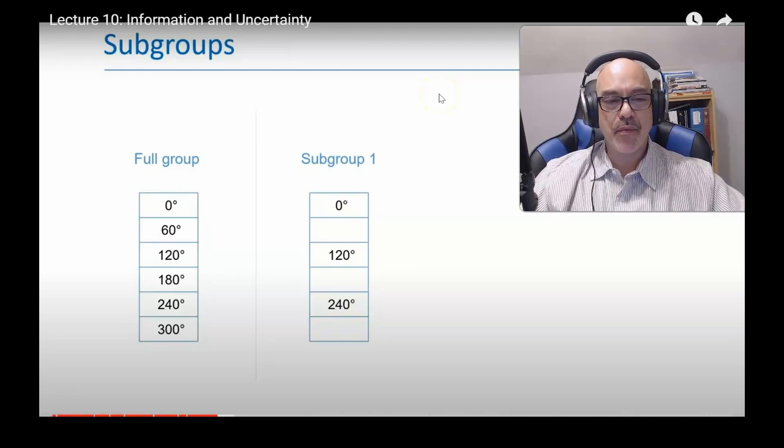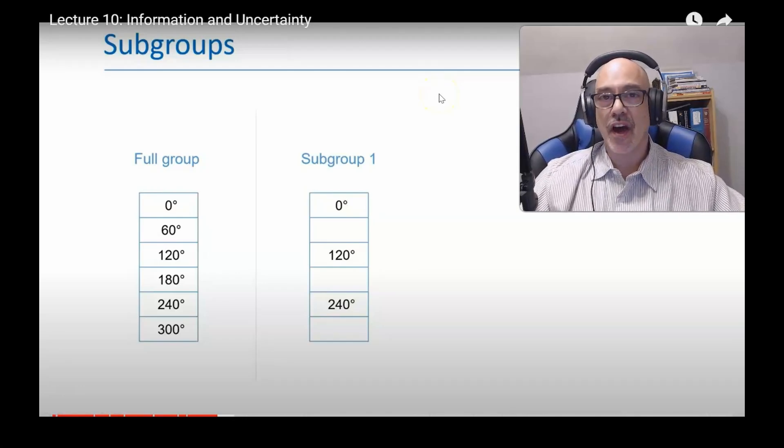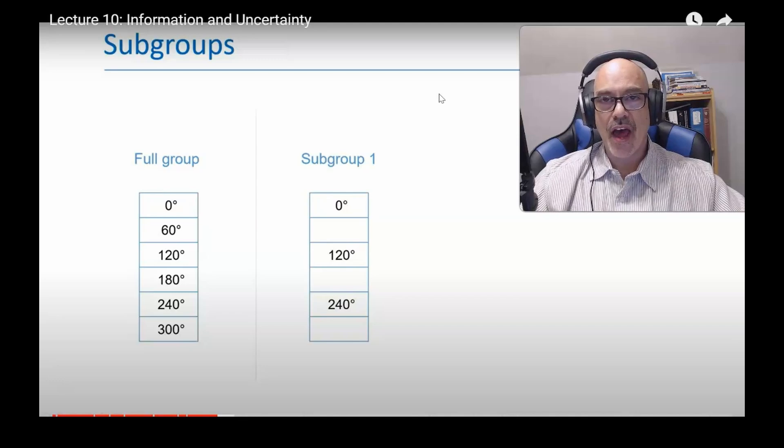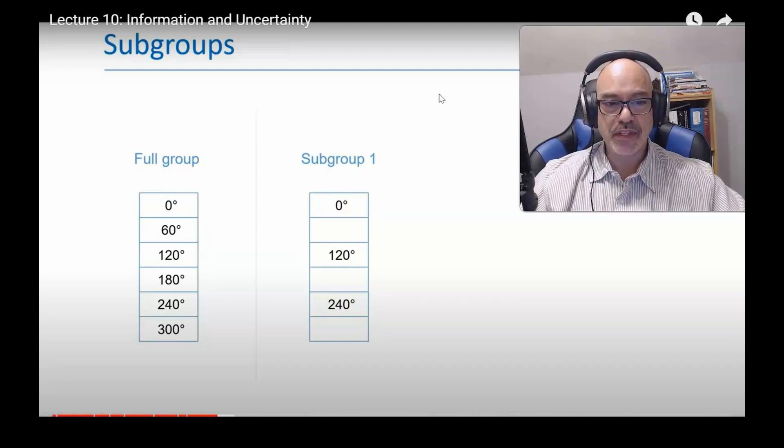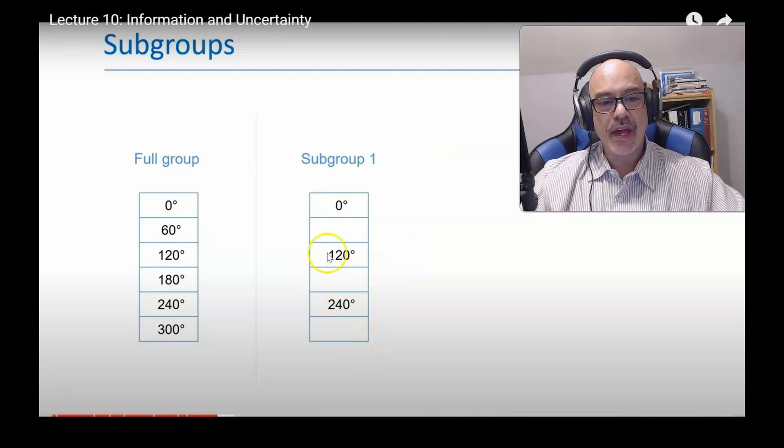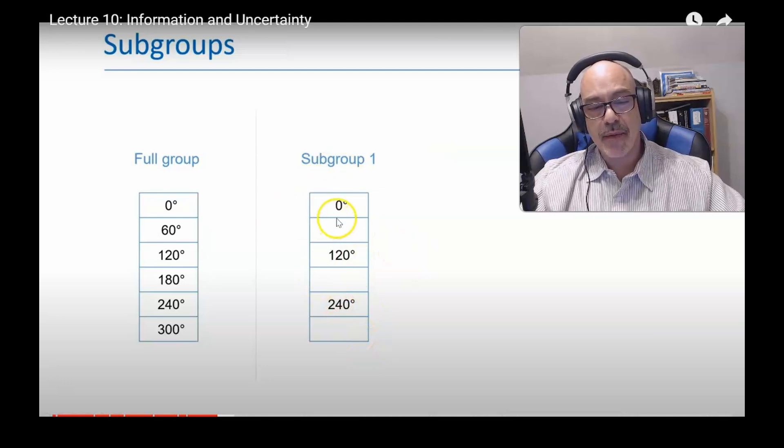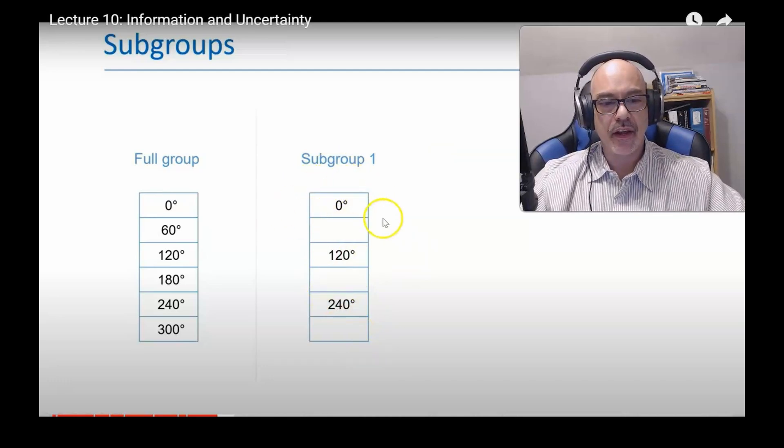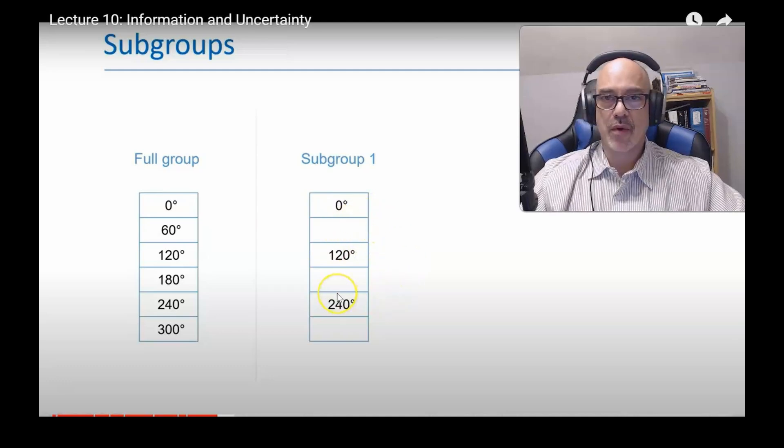Remember, the group and the subgroup are the operations that are done on the triangles. They're not the triangles, which are the states. The group is the operations. And so the subgroup is the set of operations, the identity matrix. The group always has to have an identity, and then rotate by 120 and rotate by 240.